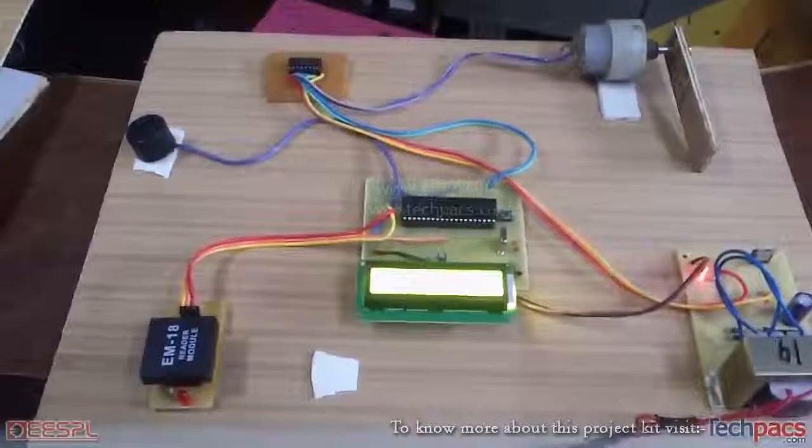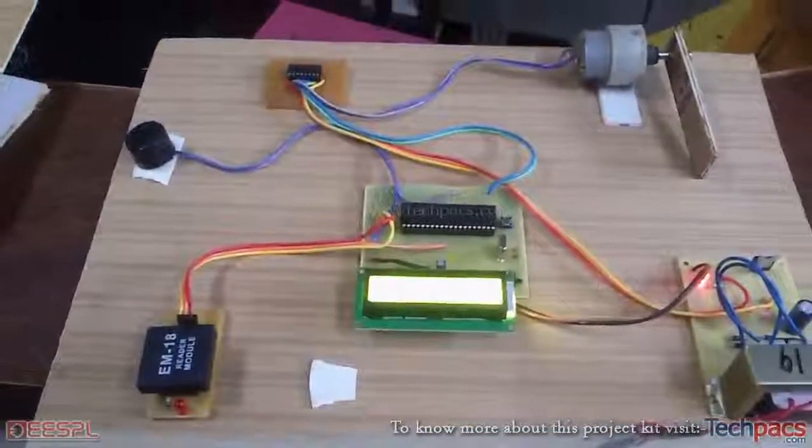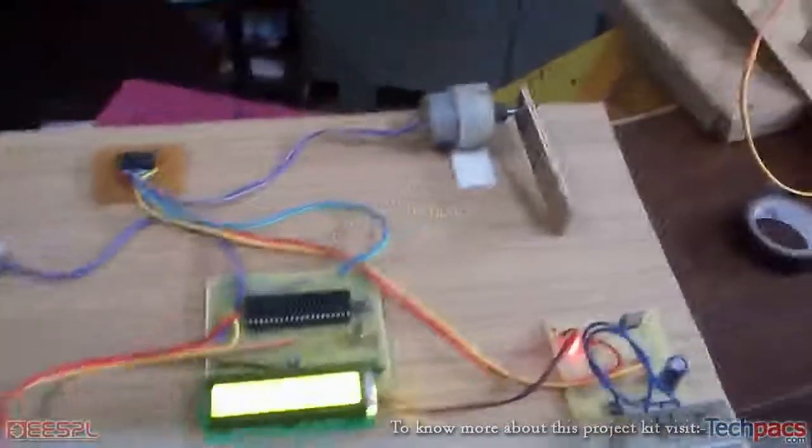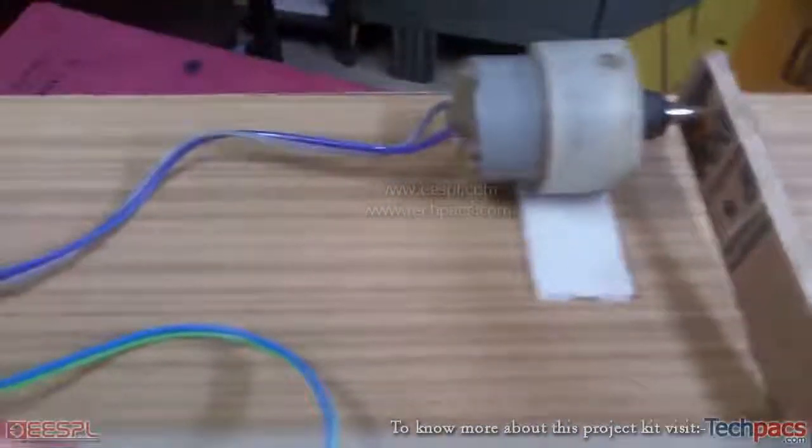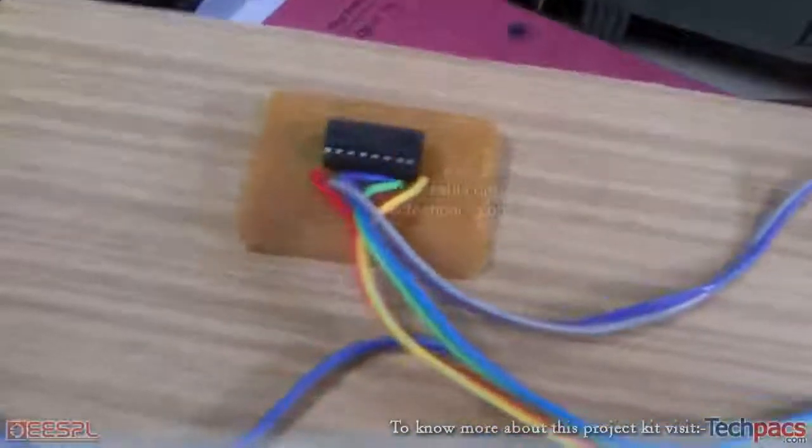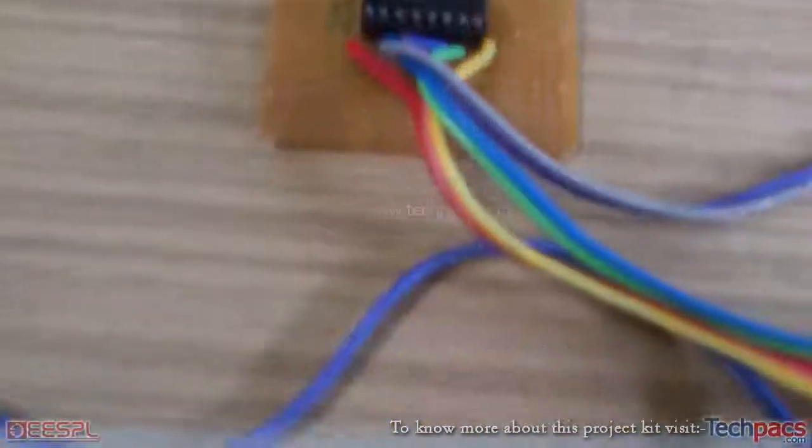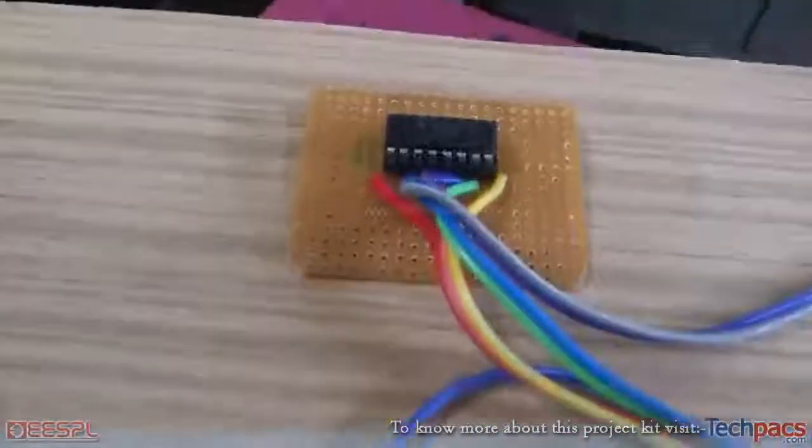...database, then it will automatically deduct the balance from the card and it will open the barrier that you can see is being attached to the DC geared motor driven by this L293D circuit in the clockwise and anti-clockwise direction.